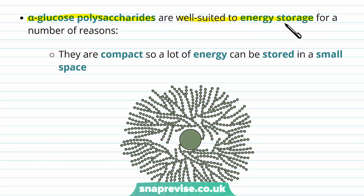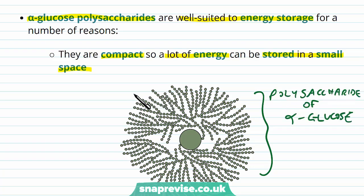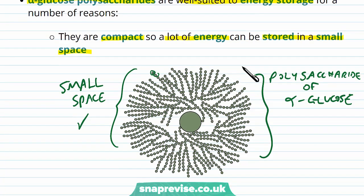Polysaccharides of alpha glucose are seen in animals and plants as good storage energy, and they're well suited for energy storage for several reasons. The first reason is they're physically very compact, so we can pack a lot of stored energy into a small space. Here is an overview of one polysaccharide made of alpha glucose — you can see that in a relatively small space, we've got lots of alpha glucose stored in multiple chains and branches. Taking up small space is good because we don't need massive cells wasting room.